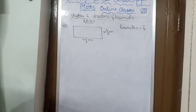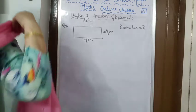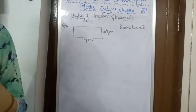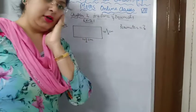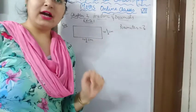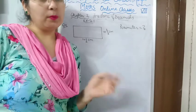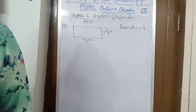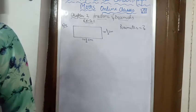So in the previous classes, we have done 3 questions — 1st, 2nd and 3rd of exercise 2.1. Today we will start with question number 4. So open your books and take out page number 31, look into your book, question number 4 and read the statement.